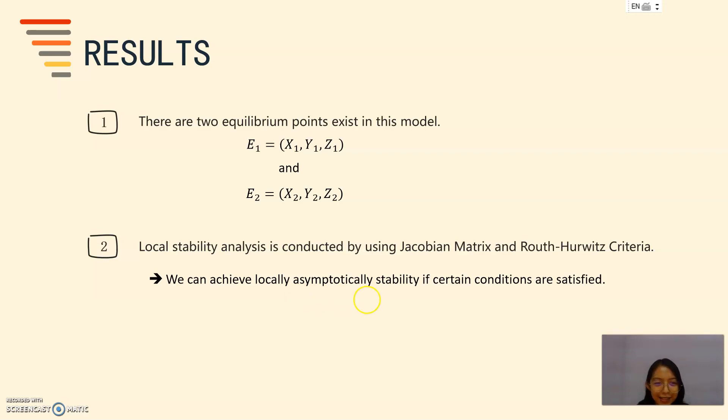As a conclusion, the purpose of this project is to introduce a cardiovascular disease model. We have generated a non-linear cardiovascular disease model which consists of three state variables X, Y, and Z. We have examined the existence of equilibrium points and we found that two equilibrium points exist in the model proposed. We determined the stability of equilibrium points by using Jacobian matrix and Routh-Hurwitz criteria. We can achieve locally asymptotically stability if certain conditions are satisfied.